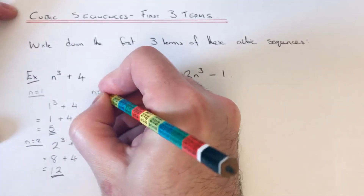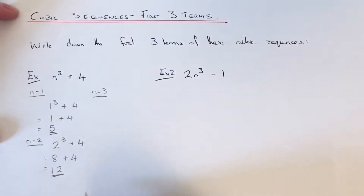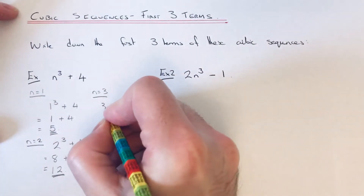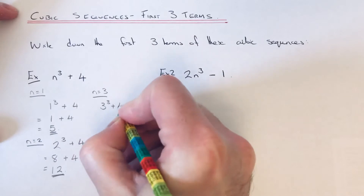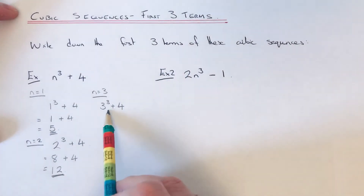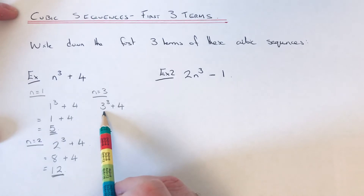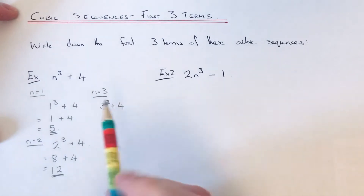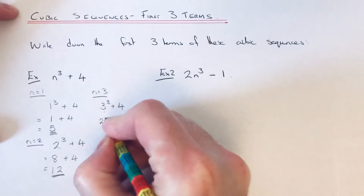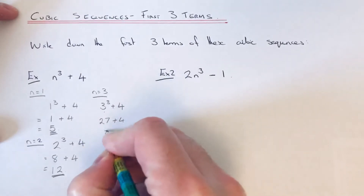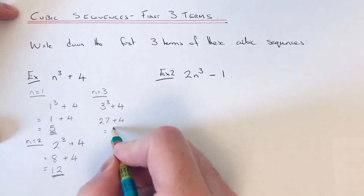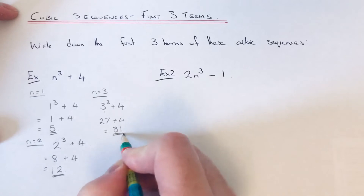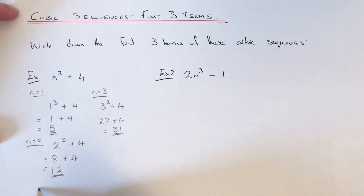That gives an answer of 12, so that is our second term. Now for our third term we substitute n equals 3, so it'll be 3 cubed plus 4. 3 cubed is 3 times 3 times 3 — 3 times 3 is 9, times 3 is 27 — add on the 4 gives an answer of 31.